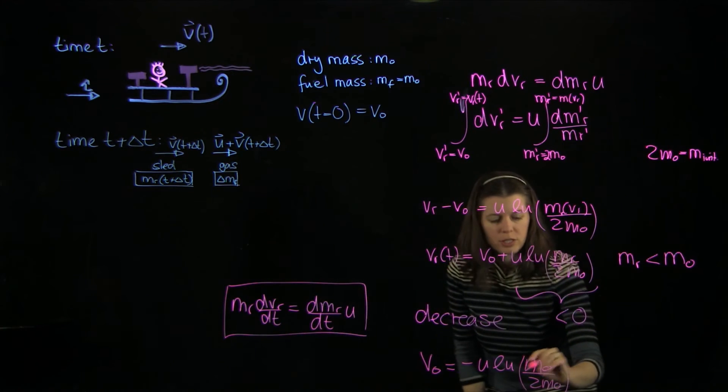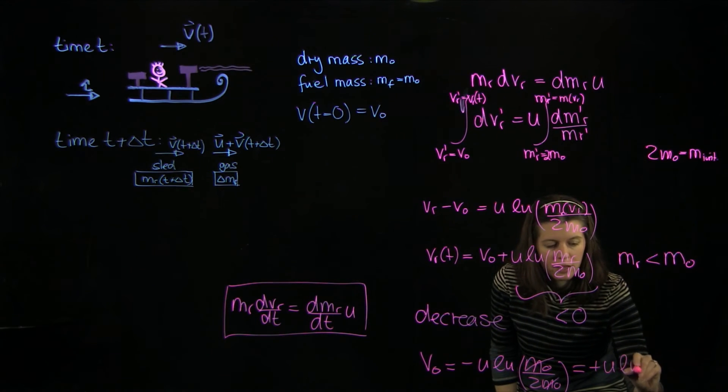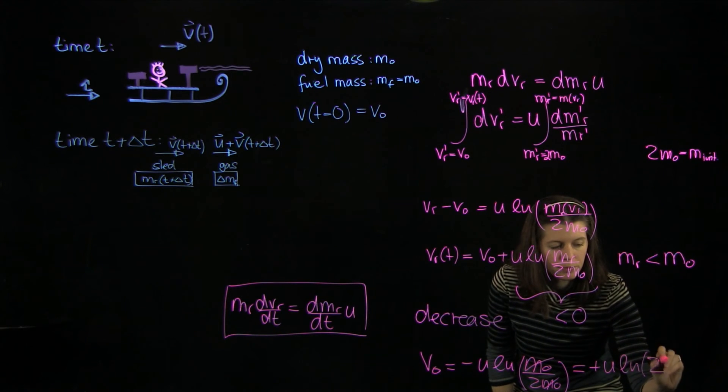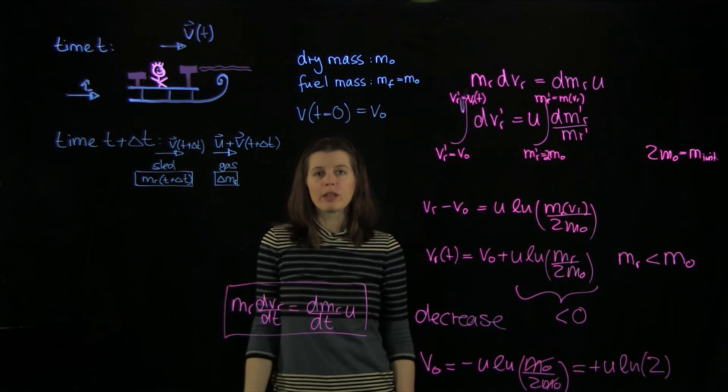And that, of course, cancels out here. And we can say that is plus u ln of 2. And so that was the velocity that the sled was going with.